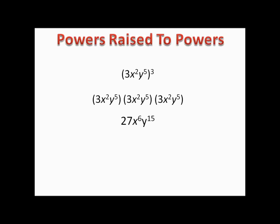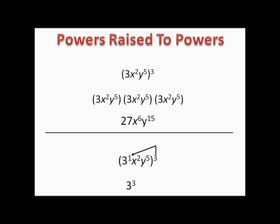It would be an awful lot of work to write everything out. Here's a shortcut: we have 3x²y⁵, and notice that 3 is really 3 to the first power. What we're going to do is distribute that exponent — and when we distribute it, we multiply the exponents. For 3 to the first, we take 1 times 3, giving us 3 to the third.